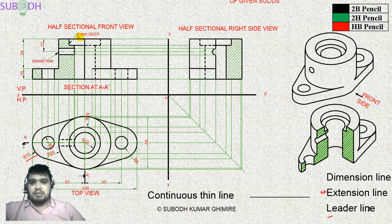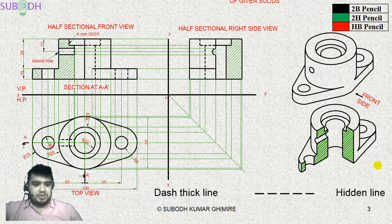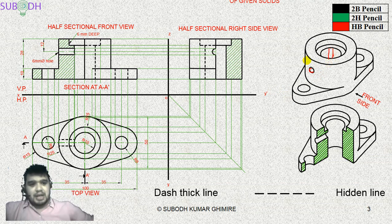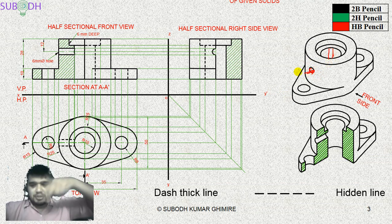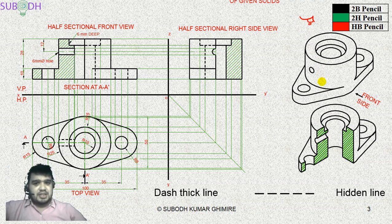The continuous thin line has a specific length — for example, about 4 mm from the width of the feature. The same length applies consistently. The dashed thin line is used for the hidden line. These lines are visible in the drawing where features are hidden — for example, a hole inside the object which cannot be seen from the outside is represented with a hidden line.